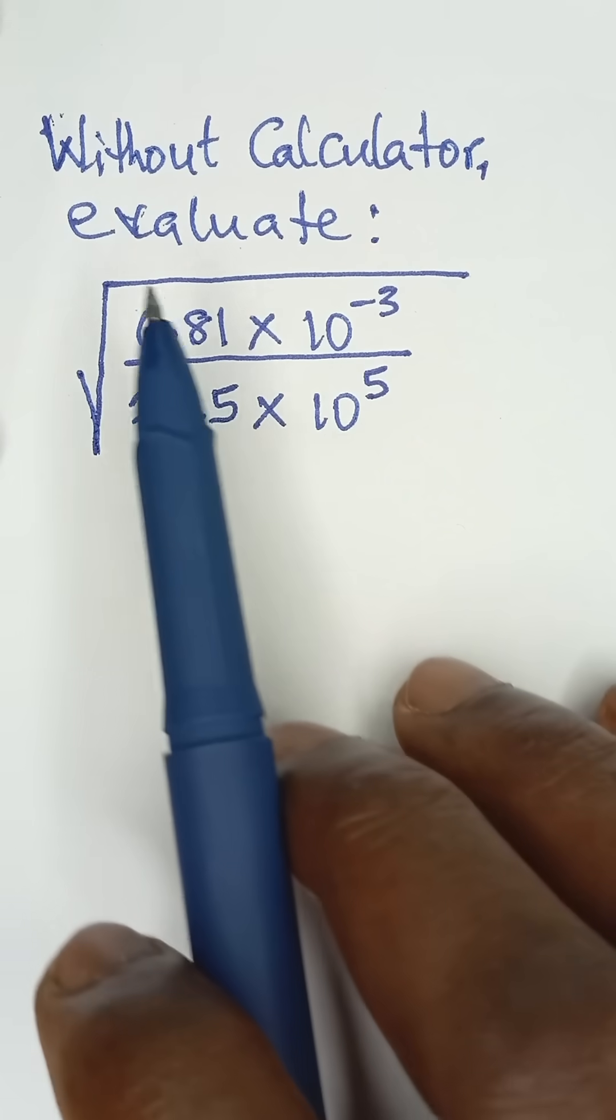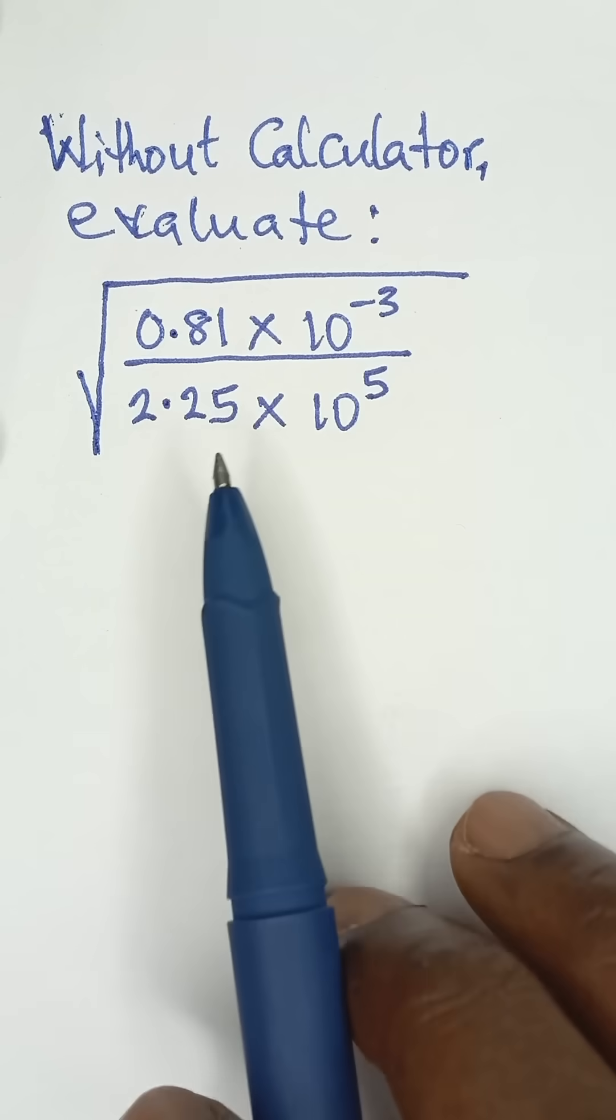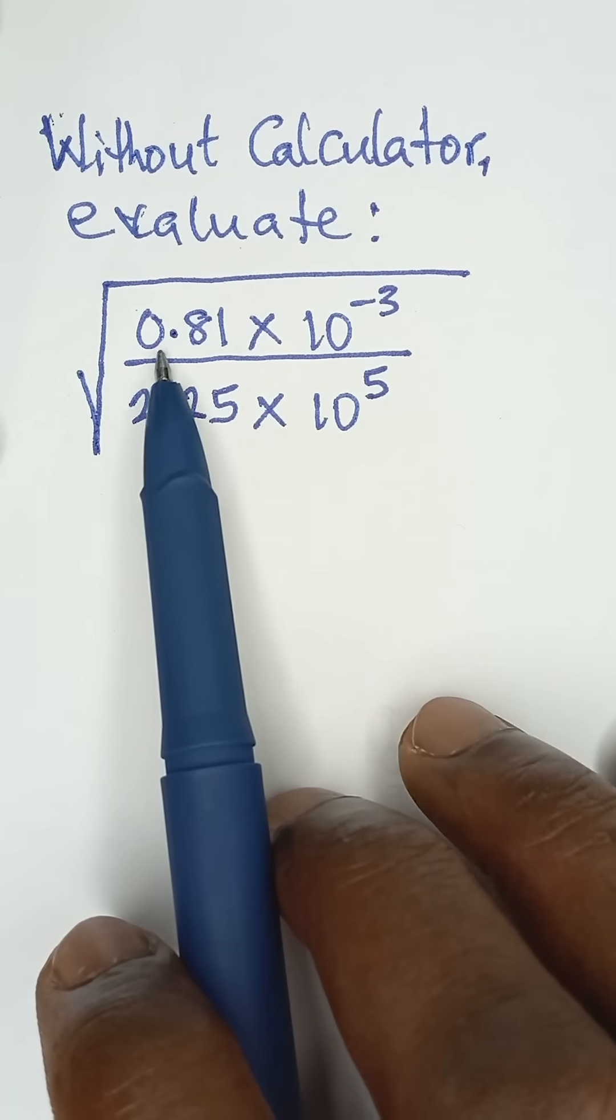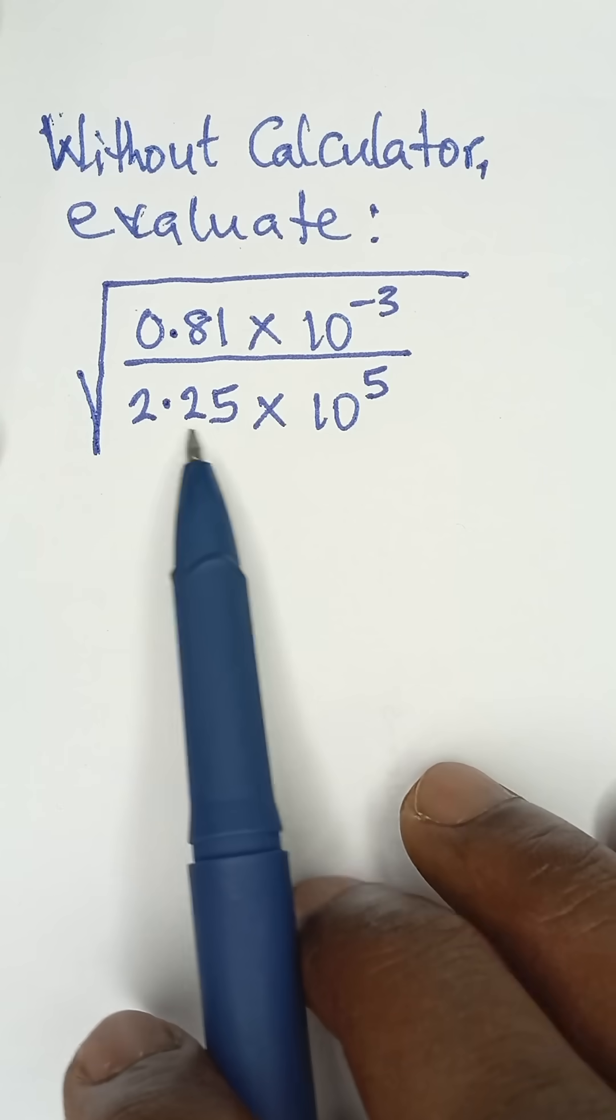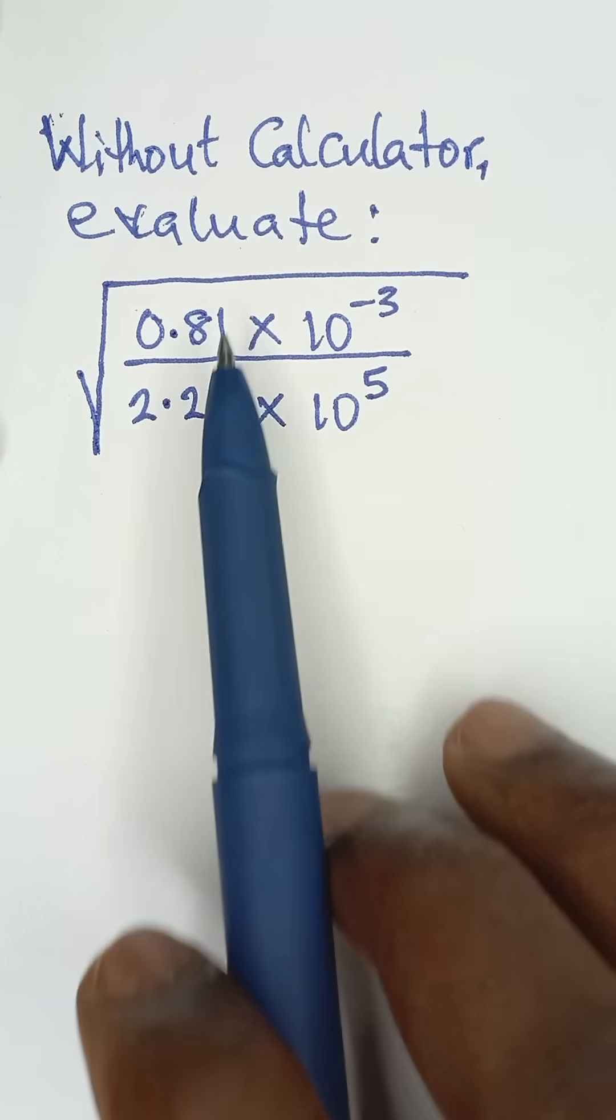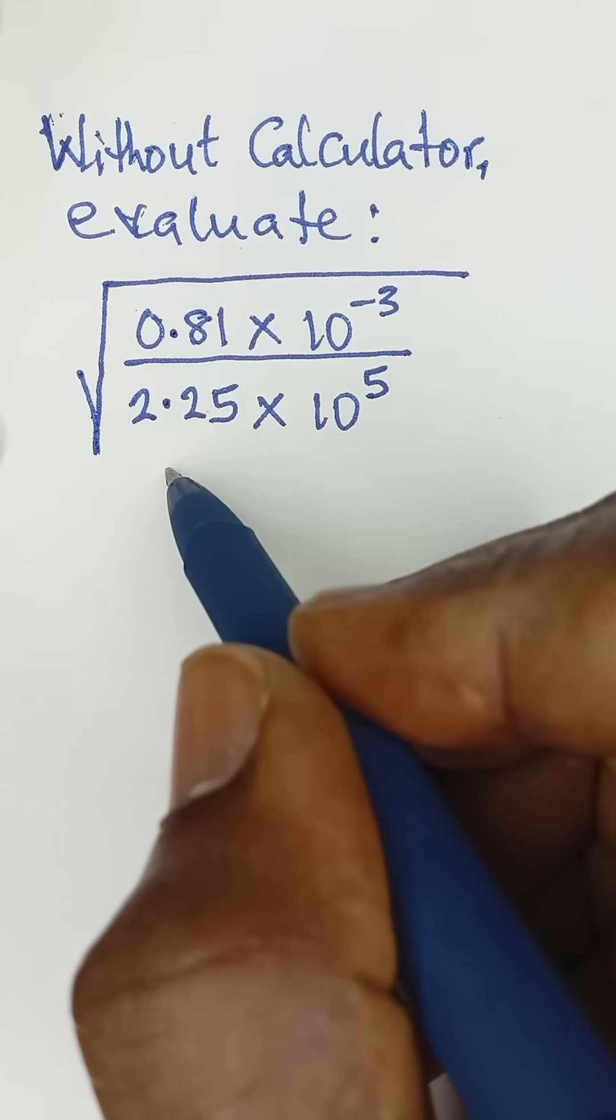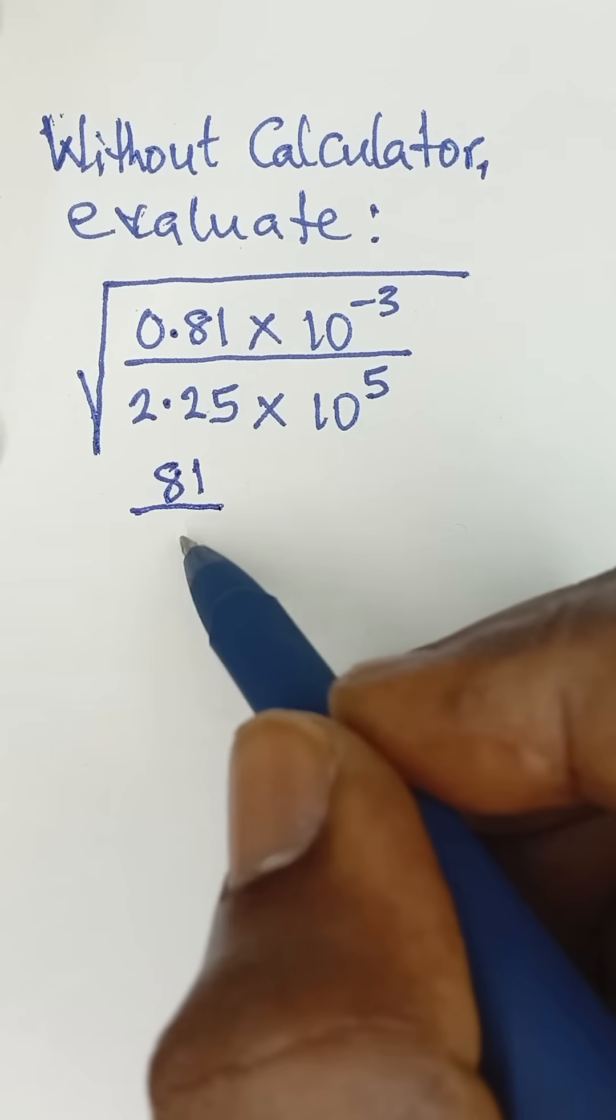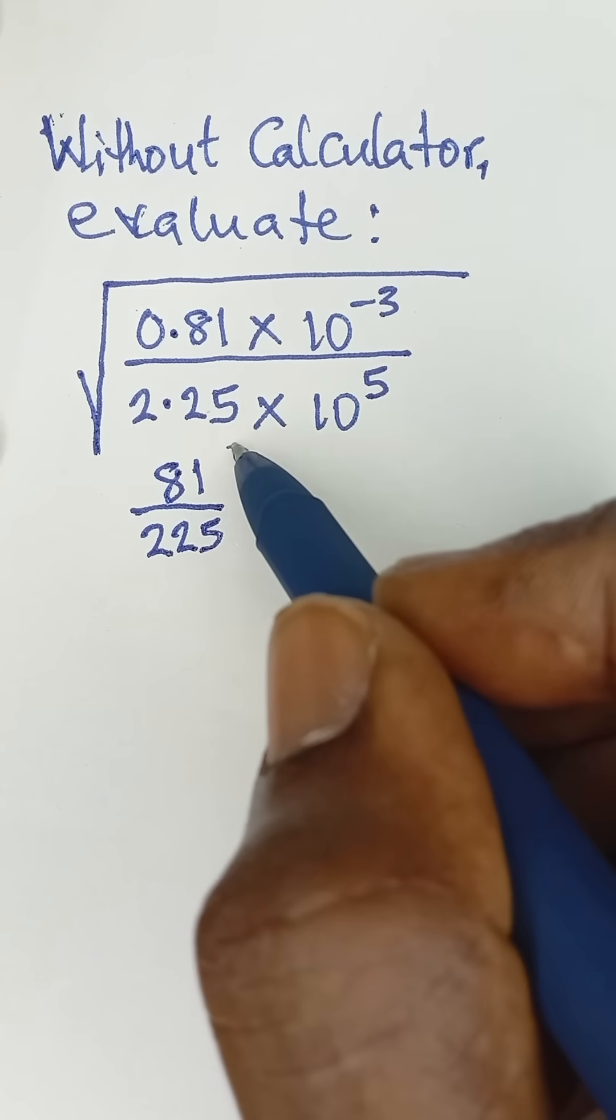Let us see how we can evaluate this without a calculator. So a very simple way of doing this is to look at this. We have two decimal places here and we also have two decimal places here, so that means we can multiply numerator and denominator by 100.